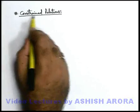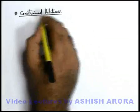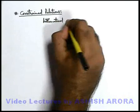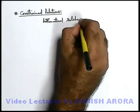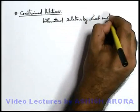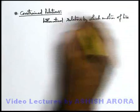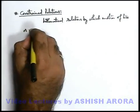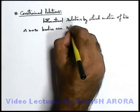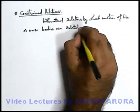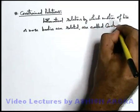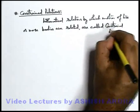Now let's talk about constrained relations. These are mathematical relations by which the motion of two or more bodies are related. These are called constrained relations.